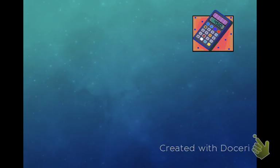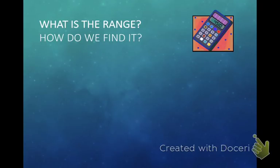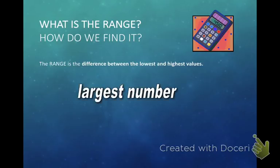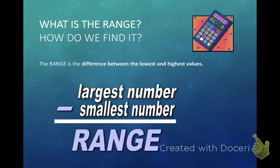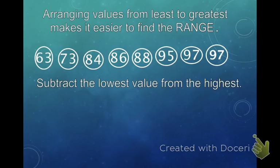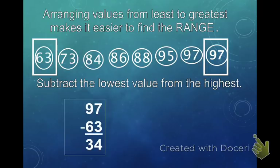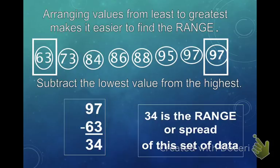Last one — the range. The range is the difference between the lowest and the highest values. Very simply, you find the lowest number and the biggest number and find the difference, which is done by subtracting the smallest from the largest. So it's the largest number minus the smallest number, and that gives you the range. We arrange from least to greatest. The biggest number and the smallest number are 97 and 63. So 97 minus 63 gives you 34. 34 is the range, or the spread of this data.